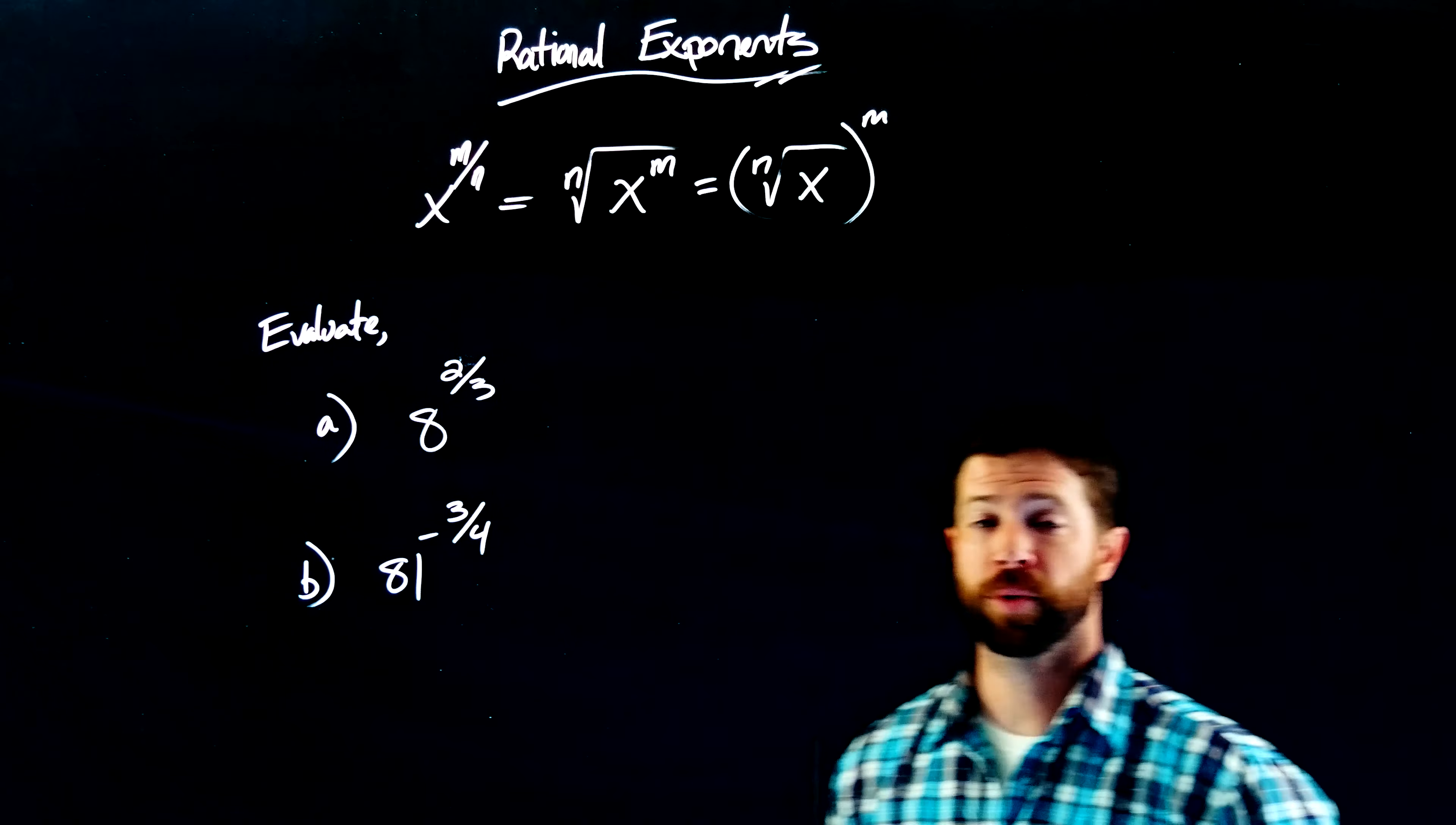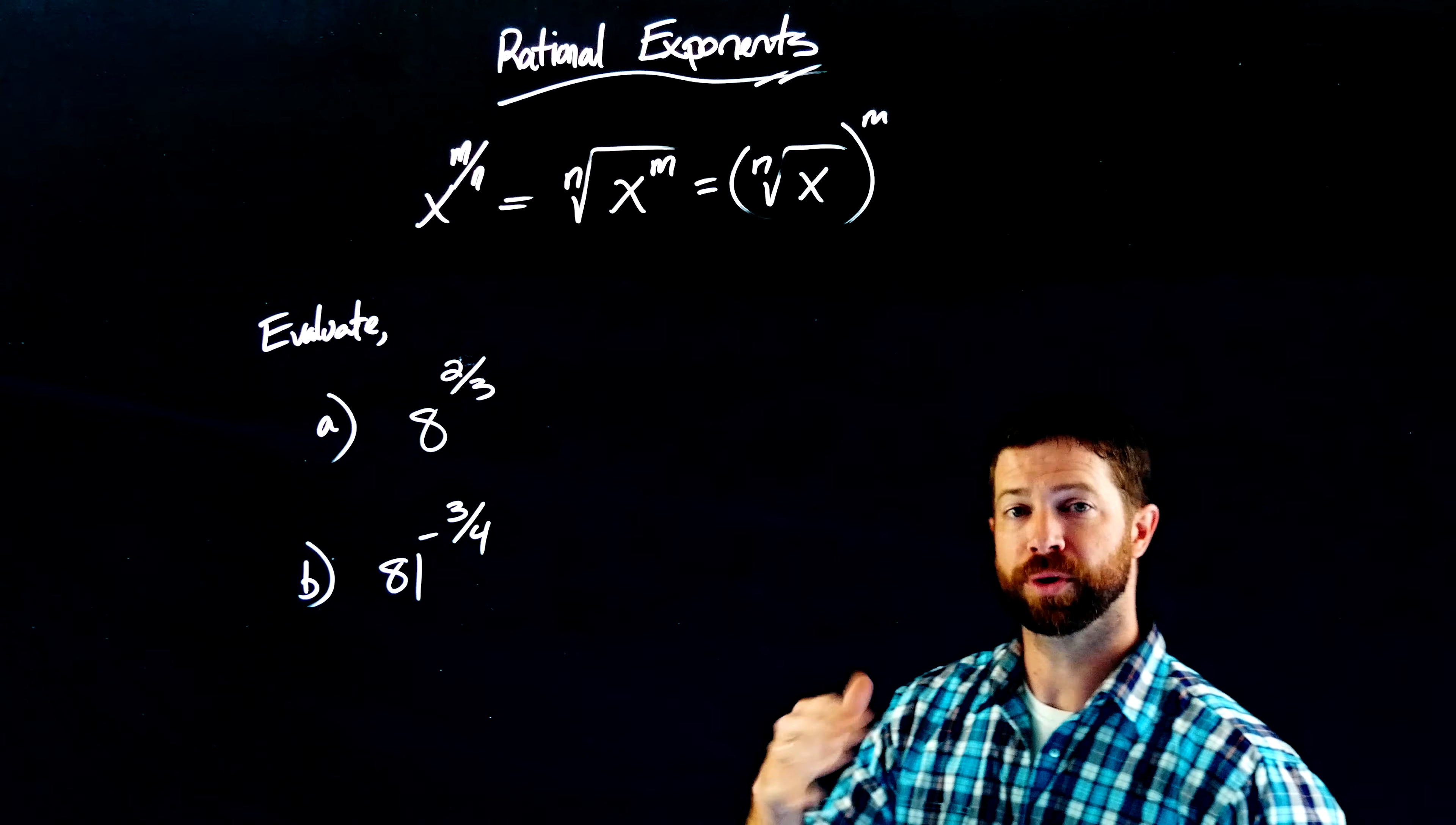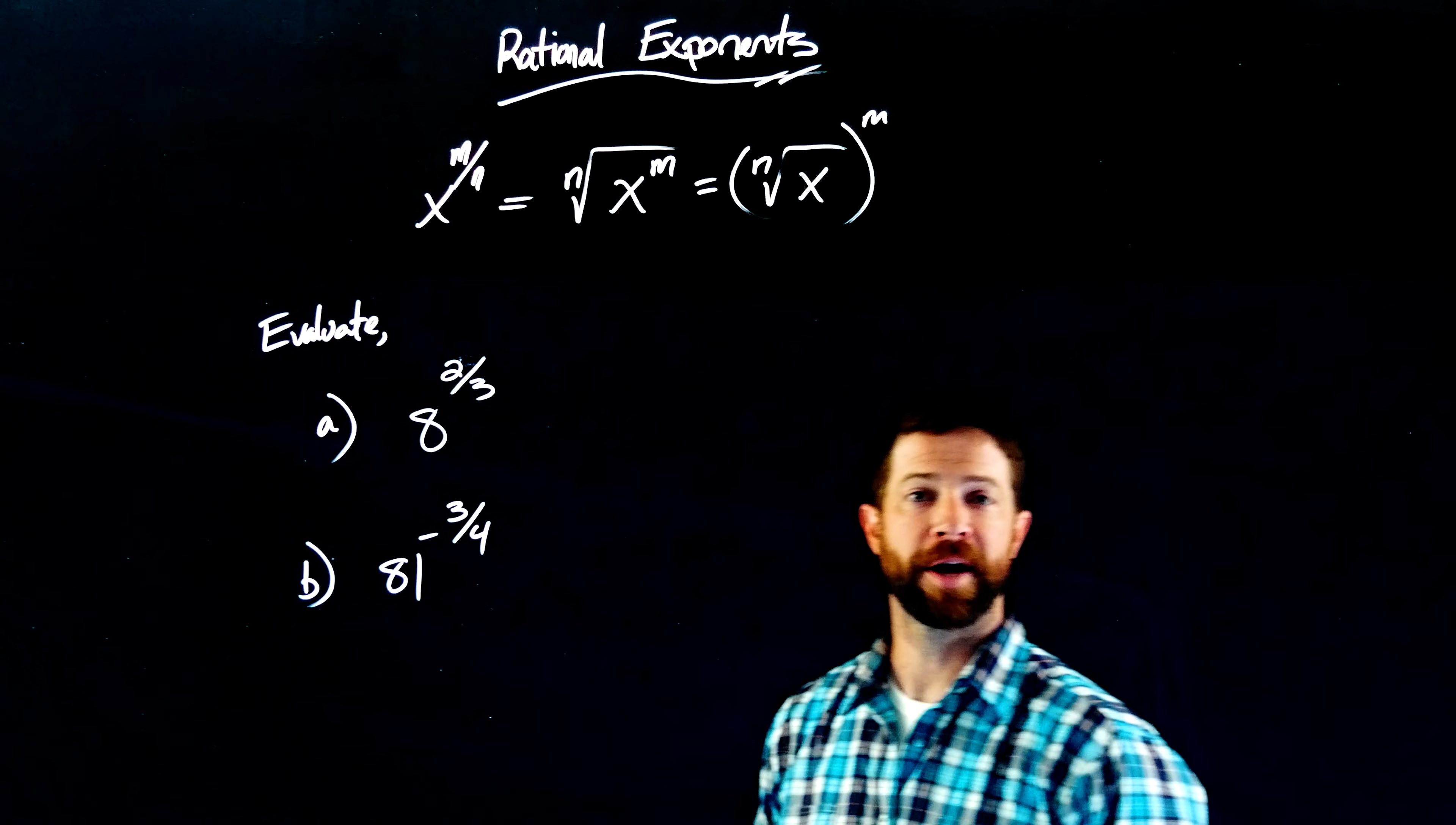I have two expressions right here, 8 to the 2 thirds and 81 to the negative 3 fourths. Let's attack these both separately and see if we can evaluate these by hand.